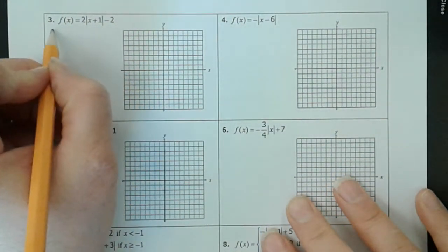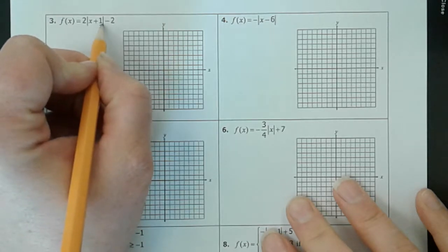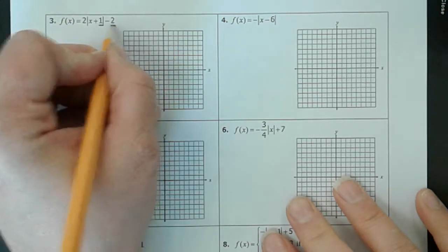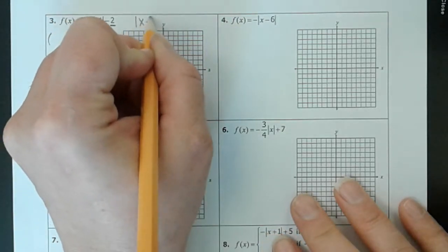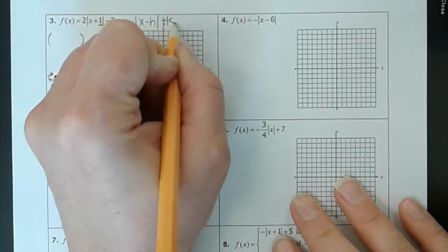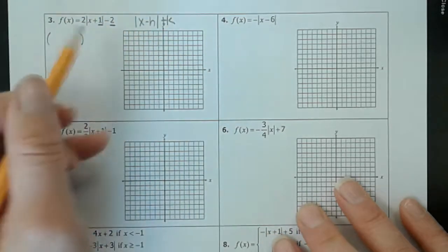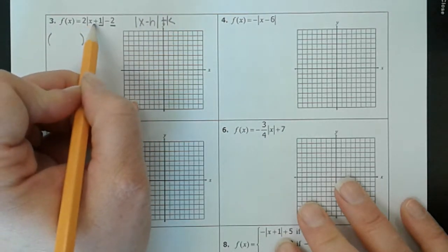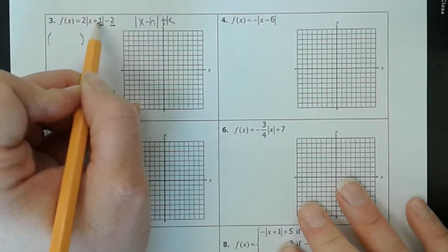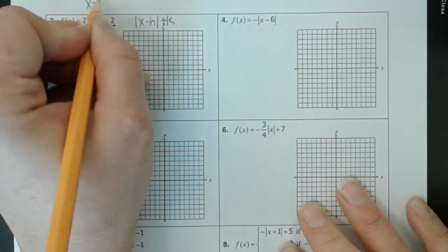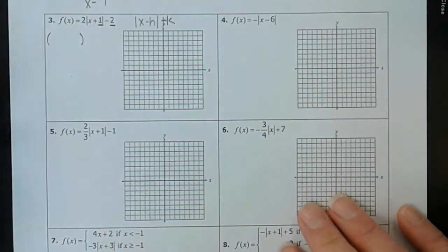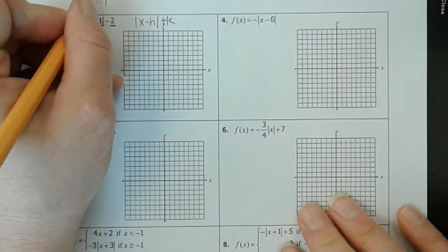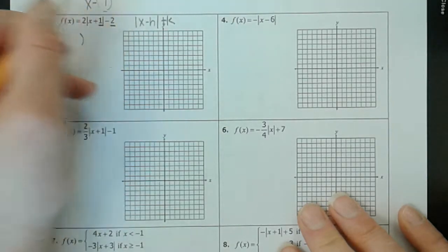Our vertex is h, k — this is h, and this is k. Our vertex form is |x minus h| plus k. So x minus h — well this is x plus 1, which is really the same as x minus negative 1. So if we want to say x minus h, what's h? h is negative 1.